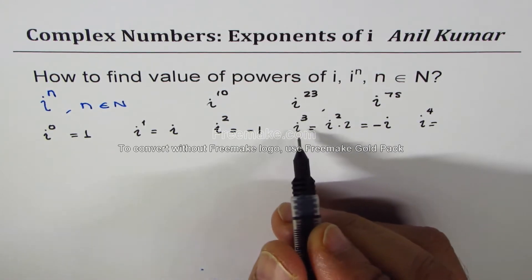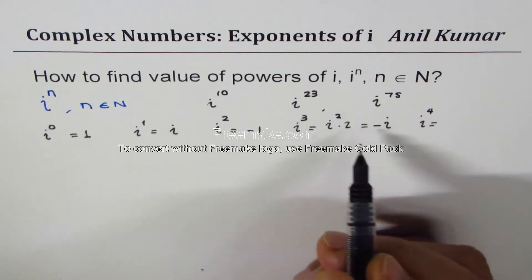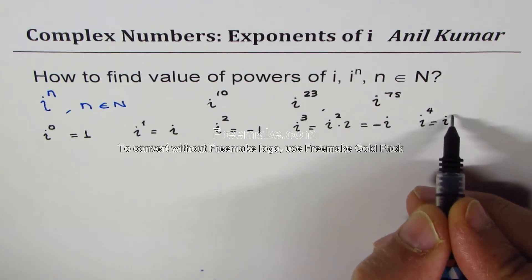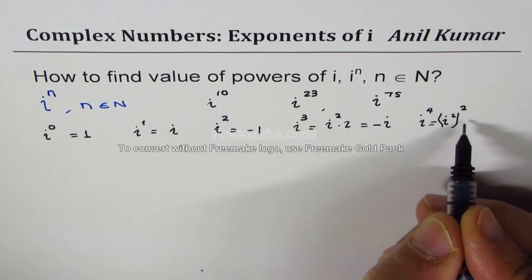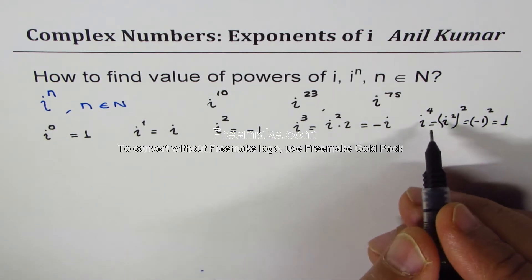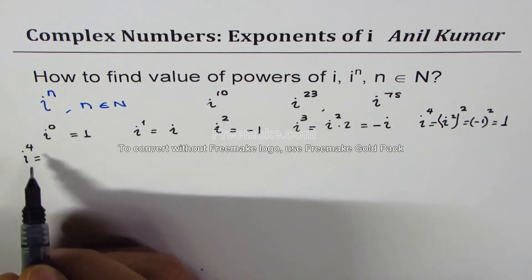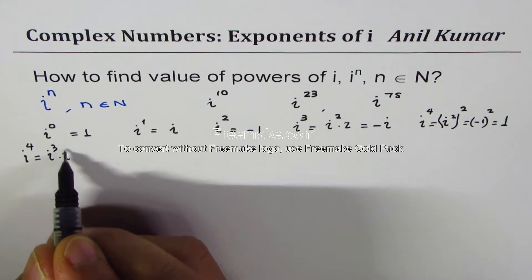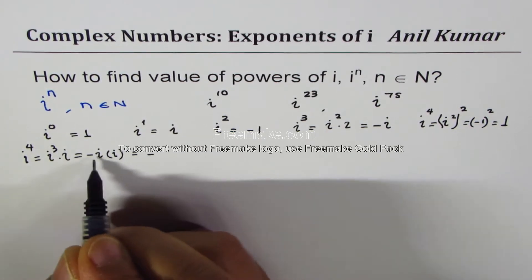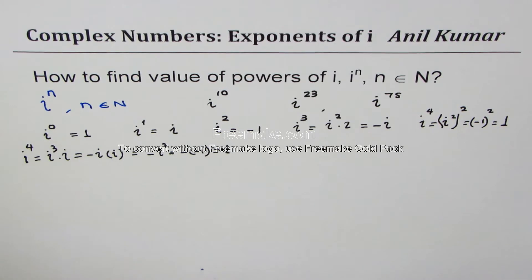i to the power of 4 is i cubed times i. We can also write it as i squared squared, which is minus 1 squared, giving us 1. Alternatively, i cubed times i equals minus i times i, which gives minus i squared, or minus of minus 1, which equals 1. So i to the power of 4 is indeed 1.